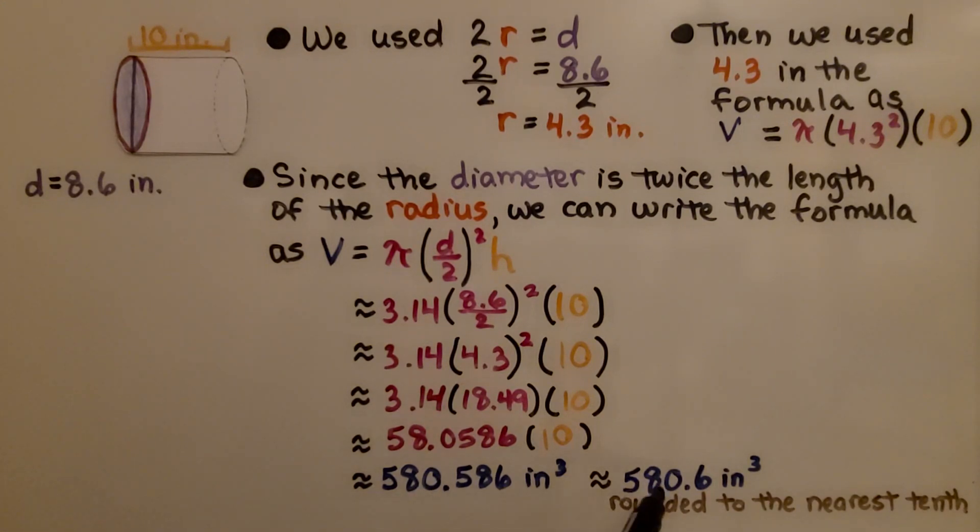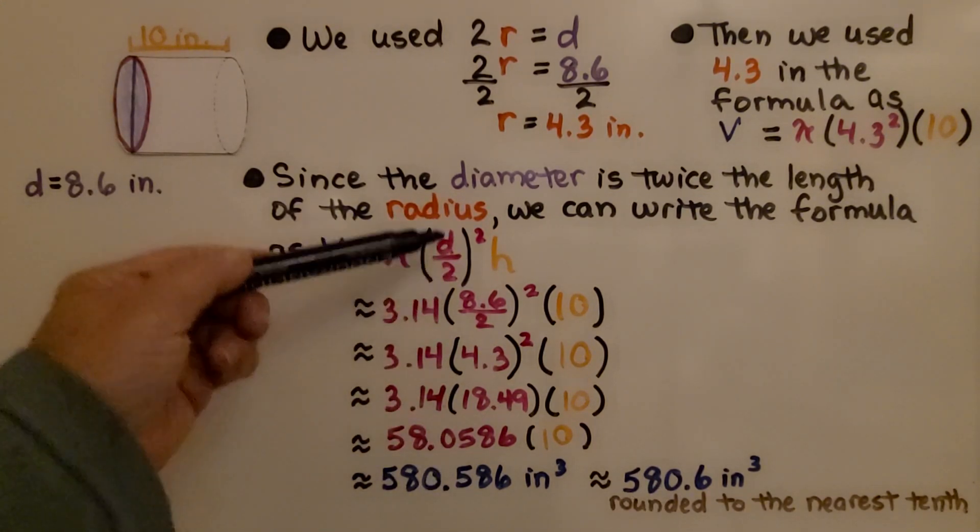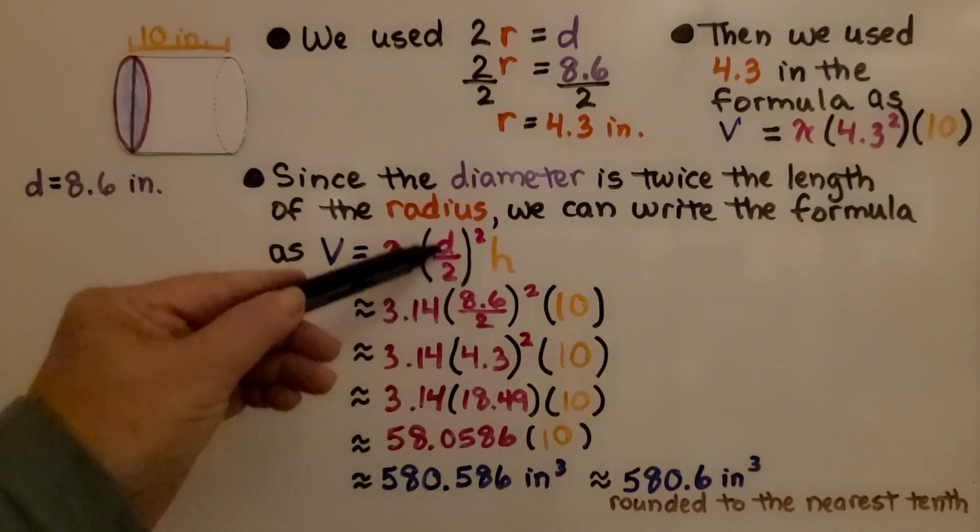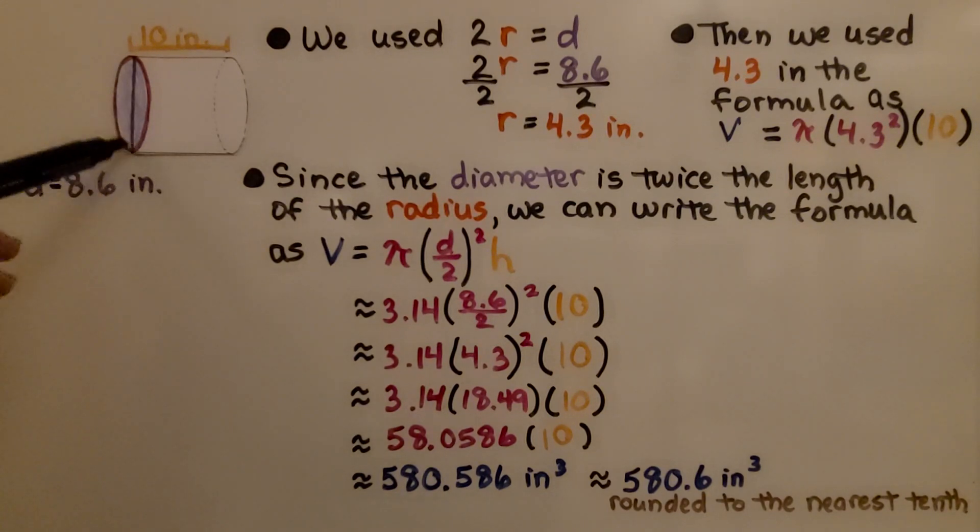We get the same answer as we did above. We just wrote the formula differently because we needed to divide the diameter by 2 in order to get the radius.